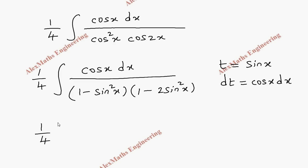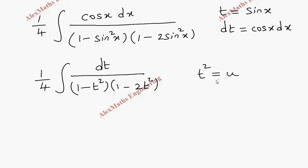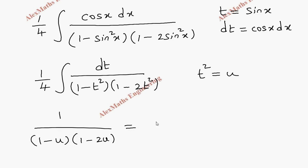So the integral becomes (1/4) integral of dt / [(1 - t²)(1 - 2t²)]. For partial fractions, let u = t². We cannot use du because we don't have a t term, so the expression becomes 1 / [(1 - u)(1 - 2u)]. We have two different factors, and applying partial fractions gives A/(1 - u) + B/(1 - 2u).